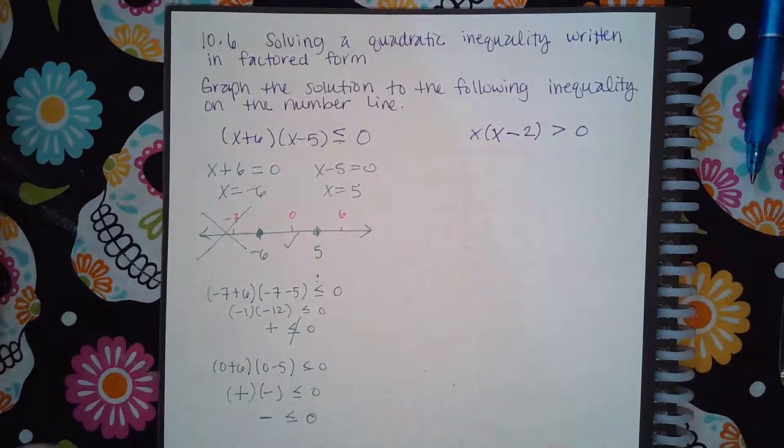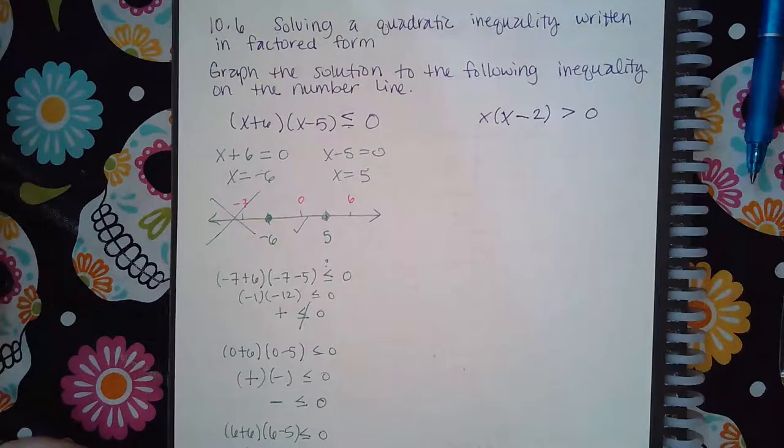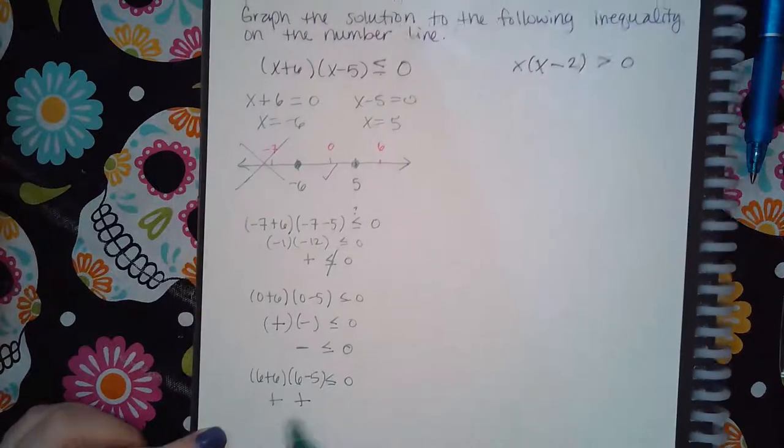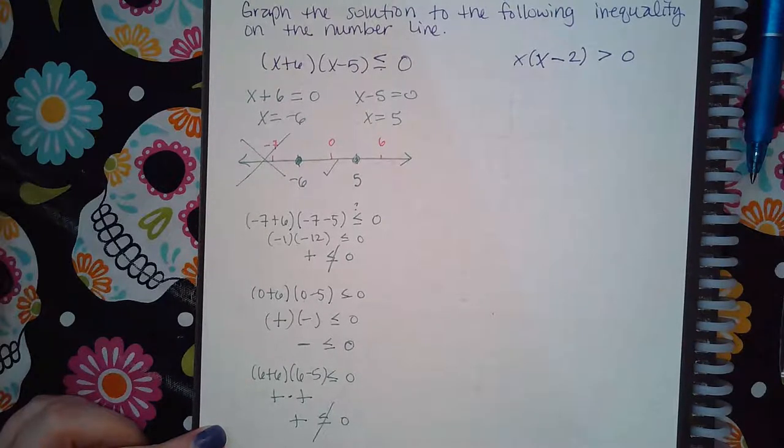And then I'm going to try positive six. So six plus six, six minus five. I'm going to get a positive here times a positive there, which when I multiply them, I'm going to get a positive and positives are not less than zero.